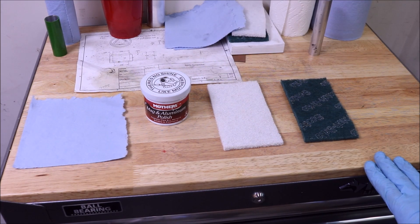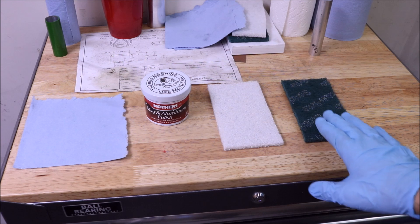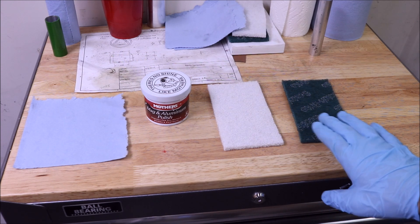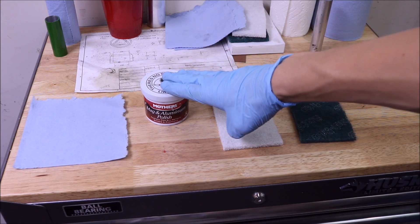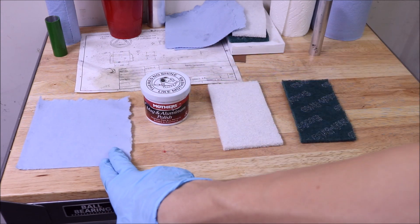The materials I'll be using to polish the aluminum rod are a green scotch-brite pad, a white fine scotch-brite pad, and Mother's Magnum aluminum polish on a lint-free cloth.